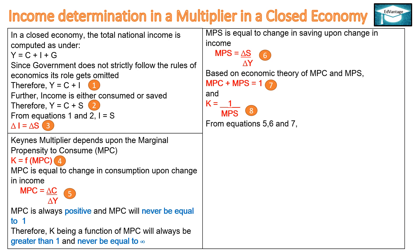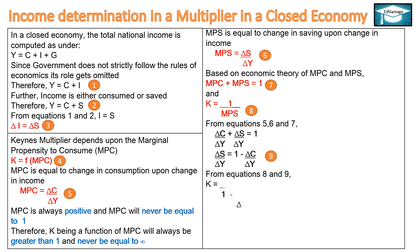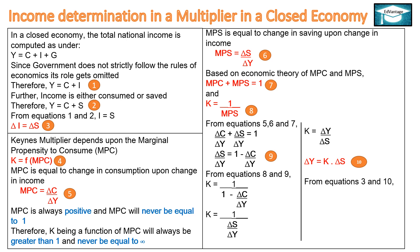Substituting the equations, we get: Change in Consumption upon Change in Income plus Change in Savings upon Change in Income equals 1. Rearranging, 1 minus Change in Consumption upon Change in Income equals Change in Savings upon Change in Income. Accordingly, K equals 1 upon Change in Savings upon Change in Income. Therefore, K equals Change in Income upon Change in Savings. Expressing in terms of Change in Income, we get: Change in Income equals K into Change in Savings.